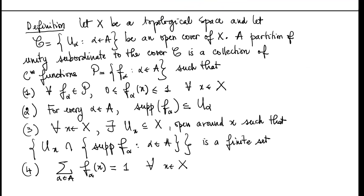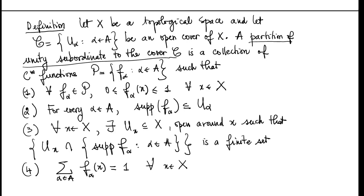So what is the partition of unity? Let X be a topological space and let C be an open cover of X. We say that a partition of unity subordinate to the cover C is a collection of smooth functions of the type f_alpha parameterized by some indexing set A, such that first, every element in this collection has range contained in the interval zero to one — so the range of f_alpha is a subset of [0,1] for every alpha in A.